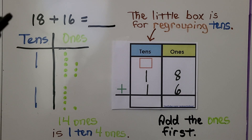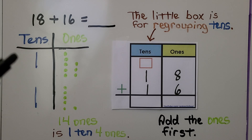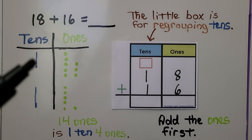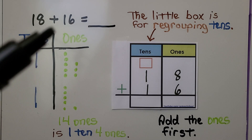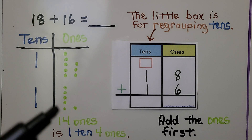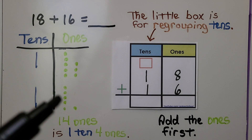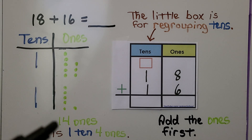Here we need to add 18 plus 16. We can draw a quick picture of the tens and ones. Eighteen is one ten, eight ones. Sixteen is one ten, six ones. We add the ones first.